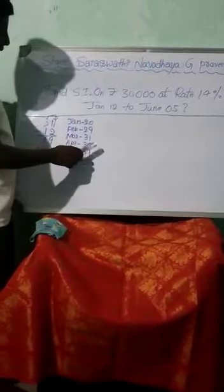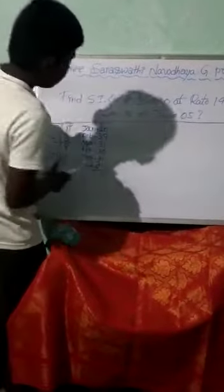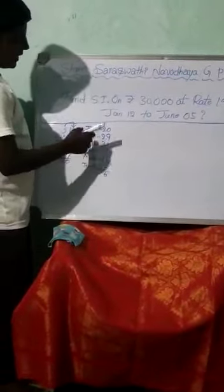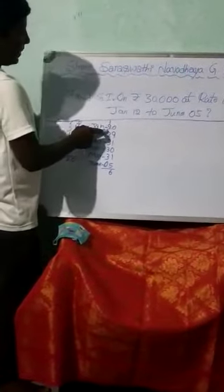Adding the days: 20 plus 9 is 29 — wait, 9 plus 1 is 10, 10 plus 1 is 11, 11 plus 4 is 16. Then 3 plus 3 is 6, 6 plus 3 is 9, 9 plus 2 is 11, 11 plus 2 is 13, 13 plus 1 is 14. The total number of days is 146.